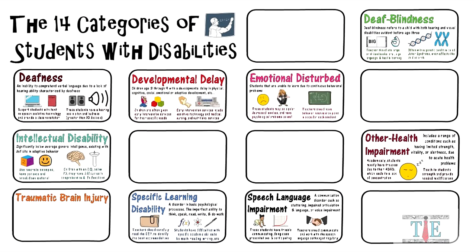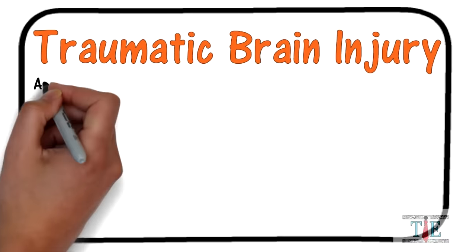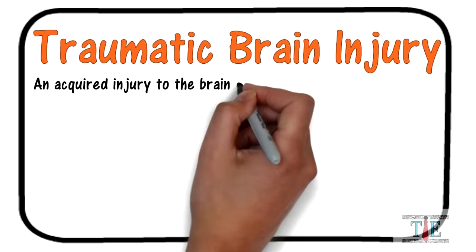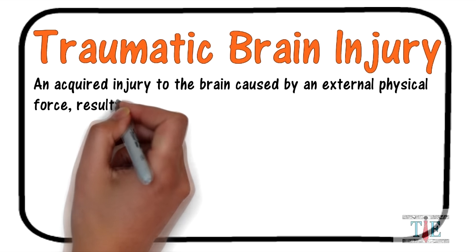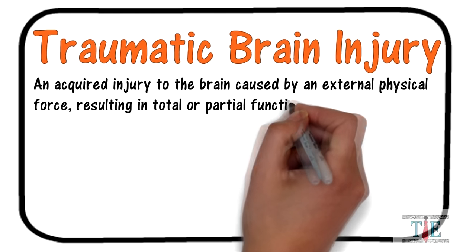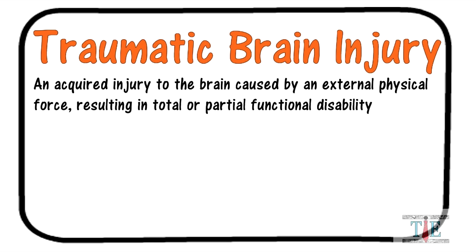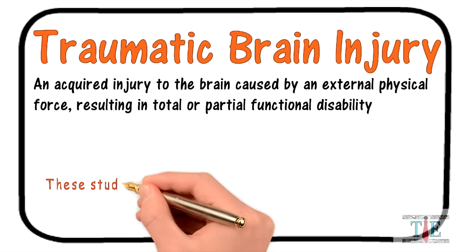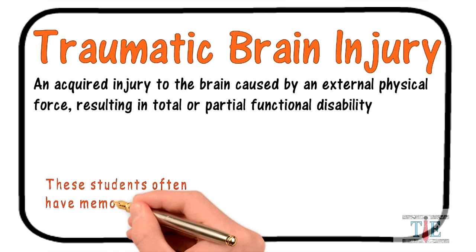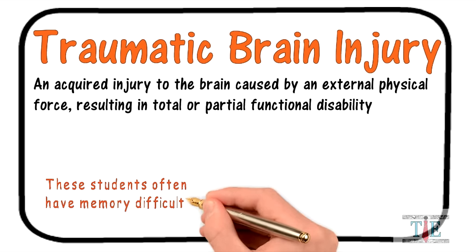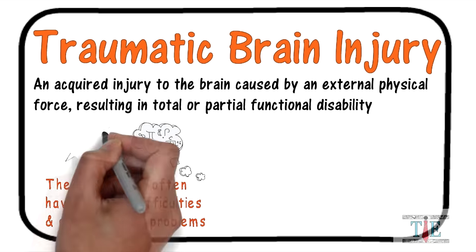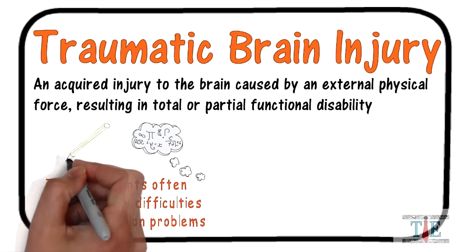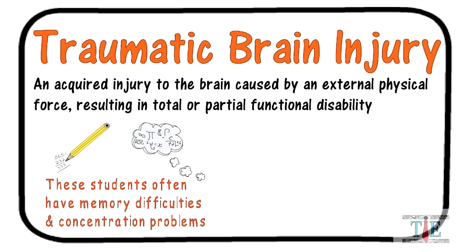Next on the whiteboard: traumatic brain injury. This is defined as an acquired injury to the brain caused by external physical force resulting in total or partial functional disability. These students often have memory difficulties and concentration problems due to brain injury. Even with research, we don't really know exactly how traumatic brain injury will affect cognitive processes.